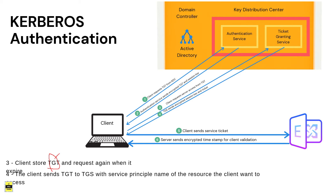The client now has an encrypted TGT stored on the client computer. Whenever the TGT expires, the local session manager will automatically request another TGT, so the client will always have a valid TGT available. That completes the second step in understanding Kerberos authentication.